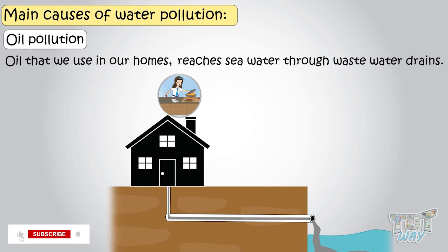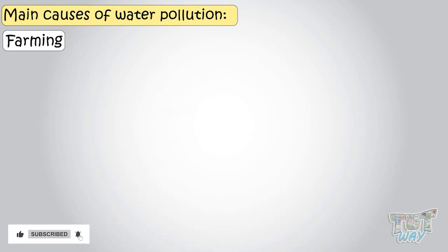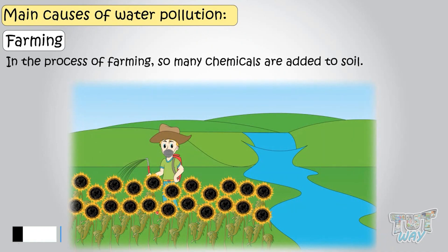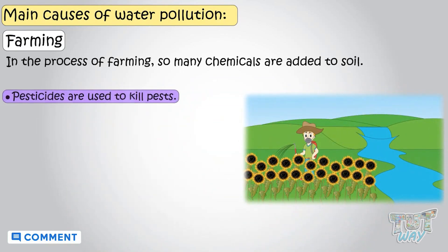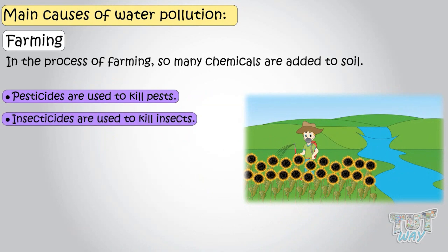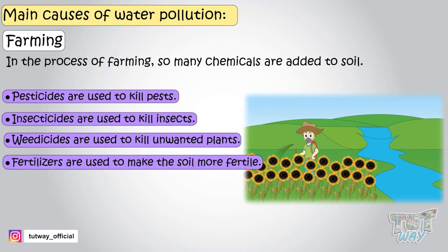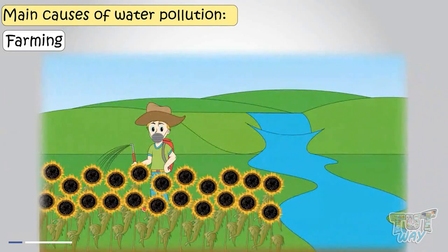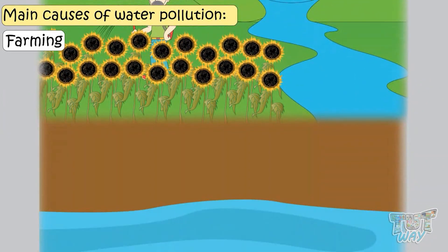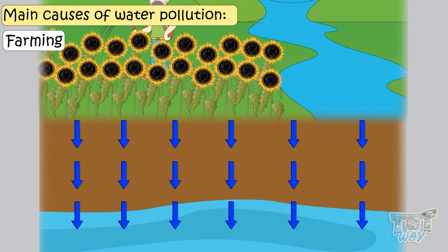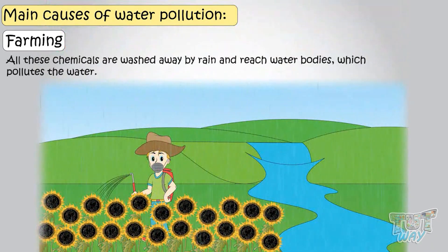Another source of water pollution is farming. In the process of farming, so many chemicals are used — like pesticides to kill pests, insecticides for killing insects, weedicides to kill unwanted plants, and fertilizers to make the soil more fertile. All these things contain chemicals that ultimately reach the groundwater and pollute it, and some is also washed away by rain and reaches water bodies, thus polluting the water.